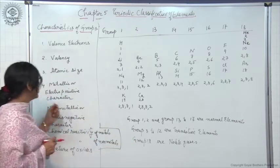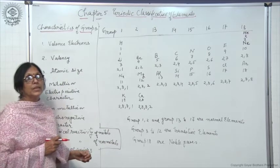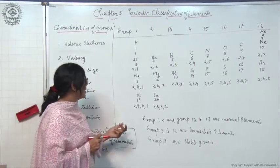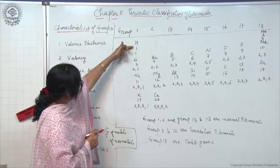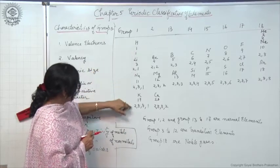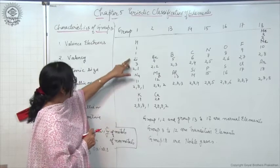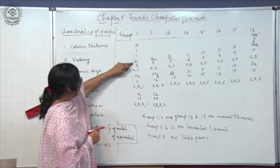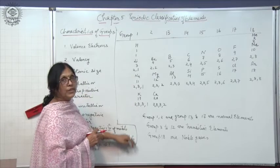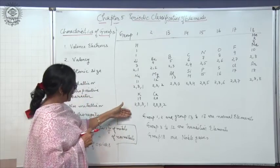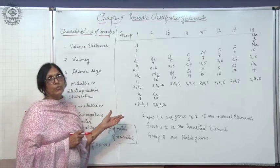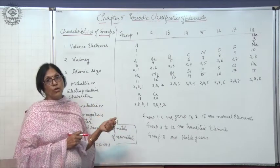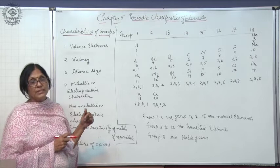Now let us see atomic size in groups. When we talk about atomic size we mean atomic radius. Moving down a group, the number of shells is increasing: hydrogen has one shell, lithium has 2, sodium has 3, potassium has 4, and so on. As the number of shells increases, the atomic size also increases. On moving down a group, atomic size increases.